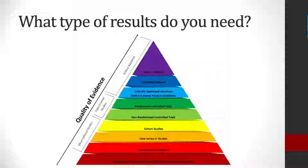We may also want to think about what type of literature to include in our results. What we have here is called the evidence pyramid. As you move up the pyramid from the bottom to the top, the quality of the evidence increases and the number of studies that match each category decreases. On the bottom we have things like background information, expert opinion, non-evidence-based medicine guidelines, and things that could form the basis of a research study — observation and similar sources.